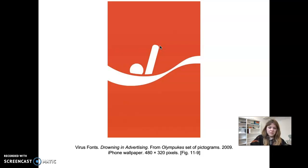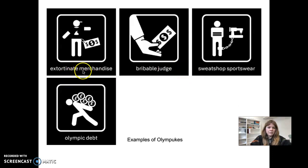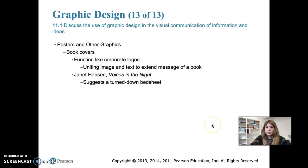This was an iPhone wallpaper available for free download at that time. Here are a few more examples from the Olympukes set — merchandise, a piece of dew on a shirt, bribable judge, sweatshops, sportswear, Olympic debt. Those are some of the other icons, or pictographs, that were made.